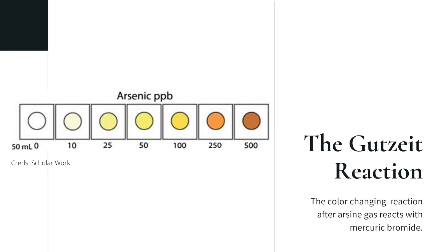The Gutzeit reaction is the color-changing reaction after arsine gas reacts with mercuric bromide. This is what ranges from dark brown to light yellow, according to the concentration of arsenic. It is especially used in toxicology, otherwise known as a formation of arsine. The picture on the left shows the scale of the colors, ranging from yellow to dark brown.